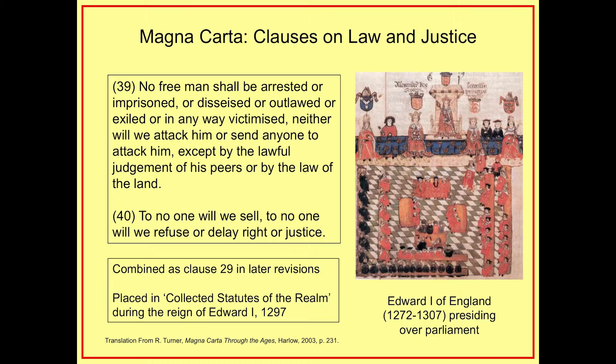So why am I standing here talking to you about it? Well, of course, by the time we get about halfway through the document, we do get to the famous clauses. I will say that the fact that these famous clauses, which have stood the test of time, come about half to two-thirds of the way through, means that they probably weren't as important to the barons as the earlier stuff about family matters, which is what they were really concerned with. But here we go. What do these famous clauses about the rule of law say? 'No free man shall be arrested or imprisoned or disseised — that means all his property taken away — or outlawed or exiled or in any way victimised. Neither will we, that's the king, attack him or send anyone to attack him except by the lawful judgement of his peers or by the law of the land.' And then in clause 40: 'To no one will we sell, to no one will we refuse or delay right or justice.' There is the statement about the rule of law.